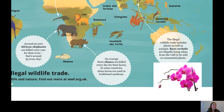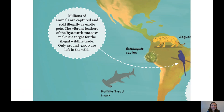The illegal wildlife trade also includes plants as well as animals. Rare orchids — you can see a picture on the screen — are illegally taken from the wild to be sold as ornamental plants. And millions of animals are captured and sold illegally as exotic pets, like the pet trade we discussed last week. The vibrant feathers of the hyacinth macaw make it a target for the illegal wildlife trade, and there are only around 3,000 left in the wild.